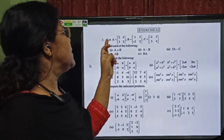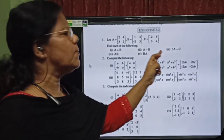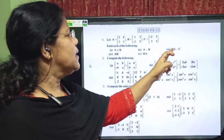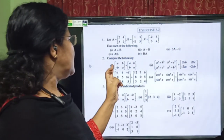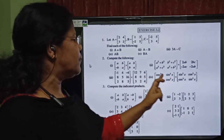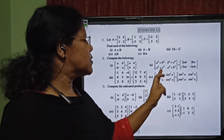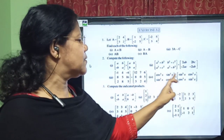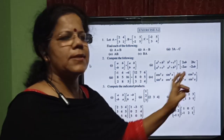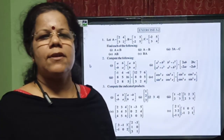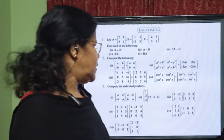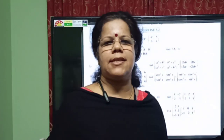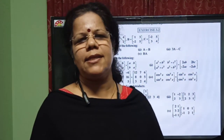In exercise 3.2, the first problem is very simple — directly adding the corresponding elements. Another involves subtraction as well as scalar multiplication. The fourth one involves cos²x plus sin²x, which equals 1, and sin²x plus cos²x again equals 1, giving the result as the matrix with all elements equal to 1. The next problem involves multiplication of matrices, which we will study in the next class.